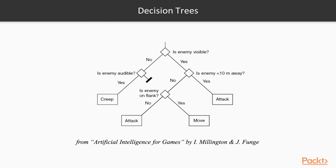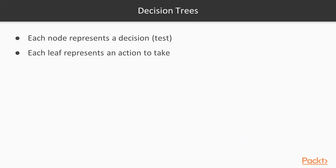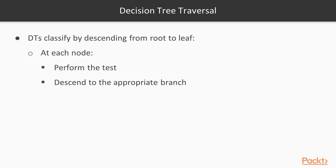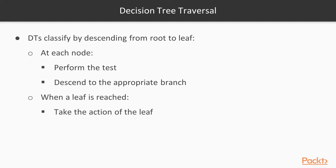Usually we use binary trees for implementing decision trees, but using n-ary trees is also possible. In decision trees, each node represents a decision to test, and each leaf represents an action to take. When traversing a decision tree, we start from the root and go to the leaf. At each node we perform a test, and depending on the result we descend to the appropriate branch. When we reach a leaf, we take the related action.